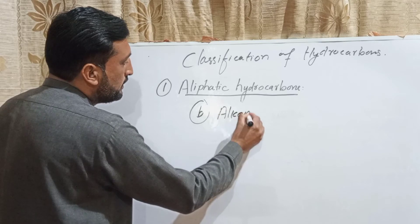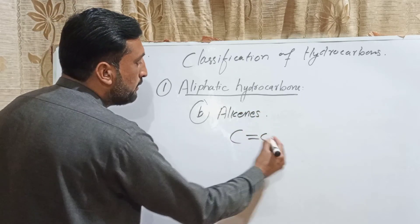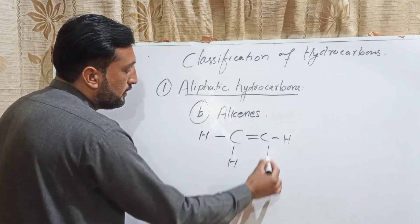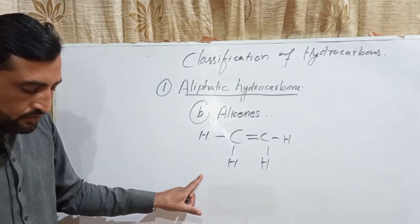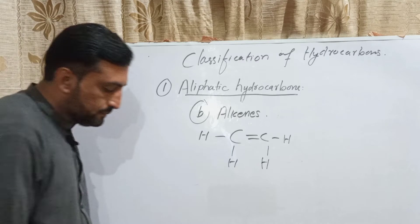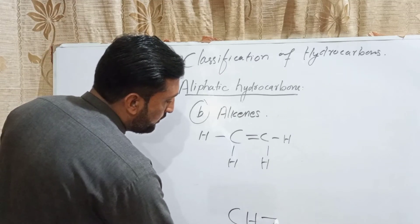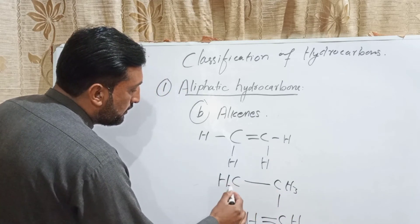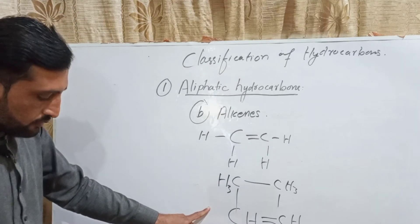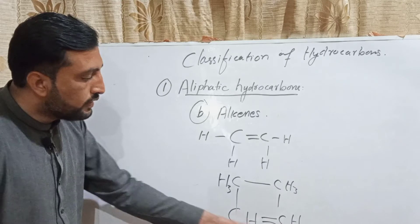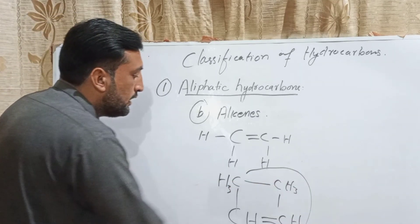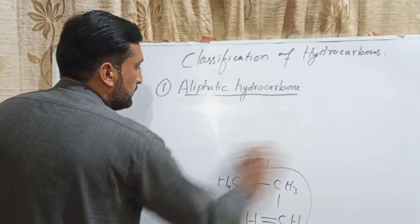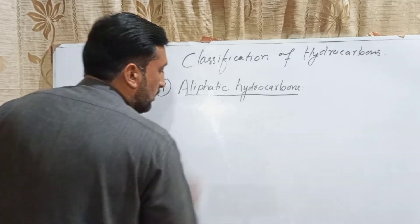The second homologous series of aliphatic hydrocarbons is alkenes. Alkenes contain at least one carbon-carbon double bond. The structure can be a straight chain, for example CH2=CH-CH3. Alkenes can also have cyclic structures.